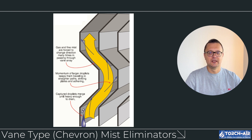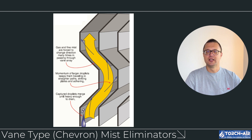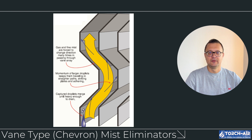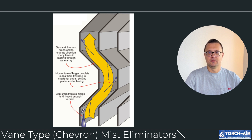The second type is vane-type, or chevron, mist eliminators. These use a series of curved or angled plates to capture droplets. As the gas stream passes through the vane structure, droplets are forced to change direction, causing them to collide with the plates and coalesce. Best for large to medium droplet sizes, these systems are effective for high-flow gas streams and are relatively resistant to clogging since there are no small gaps like in mesh pads. However, they are not as effective for capturing very fine mist, but are great for applications with high liquid load.